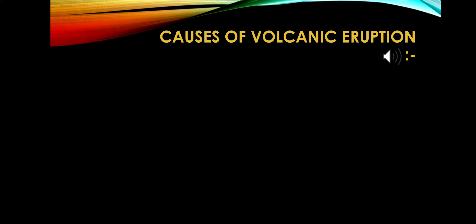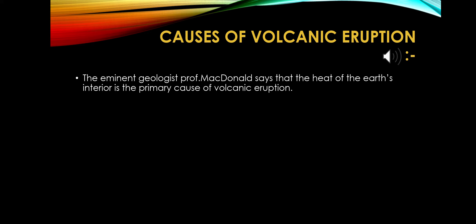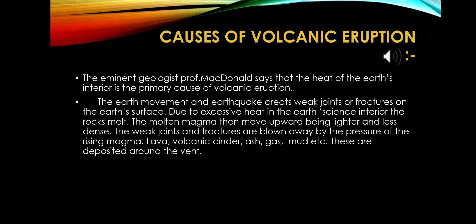Now we will discuss the causes of volcanic eruptions. There are several causes. According to Professor McDonnell, the heat of the earth's interior is the primary cause. Earth movements and earthquakes create cracks, joints, and fractures on the earth's surface. Due to excessive heat in the earth's interior, rocks melt and the molten magma moves upward, being lighter and less dense. The weak joints and fractures are blown away by the pressure of the rising magma, lava, and volcanic materials including gas, mud, etc., which are pushed out and deposited around the vent.